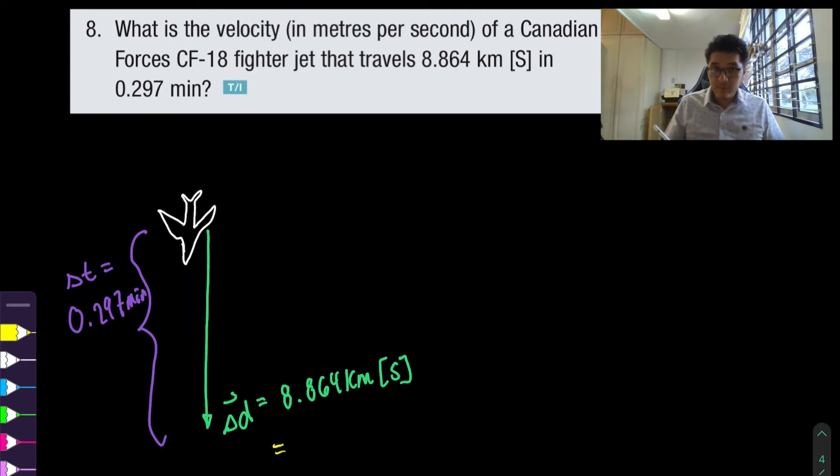So to convert kilometers to meters just multiply by a thousand or move the decimal over three places one two three and to convert from minutes to seconds divide by 60. I'll show you that before right. Okay so we got 0.00495 seconds.